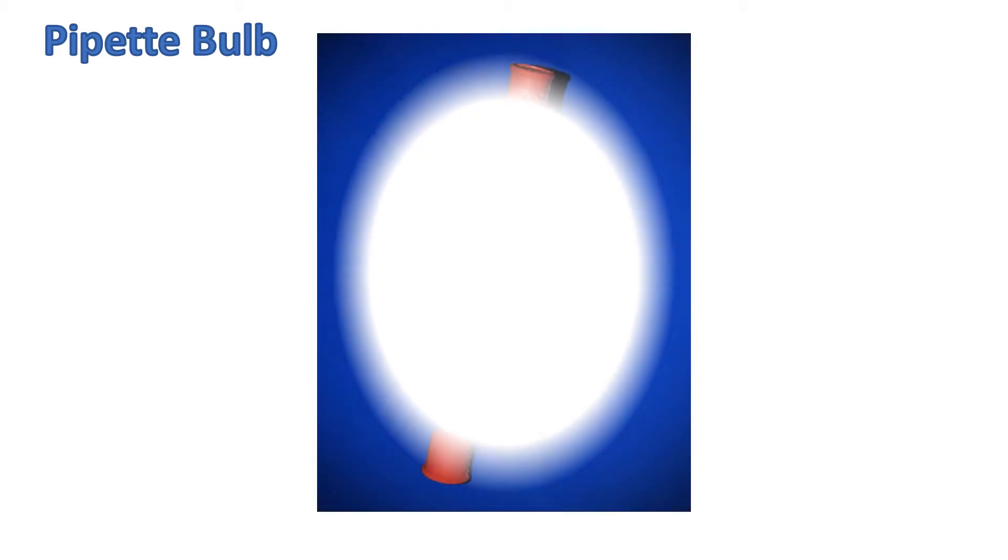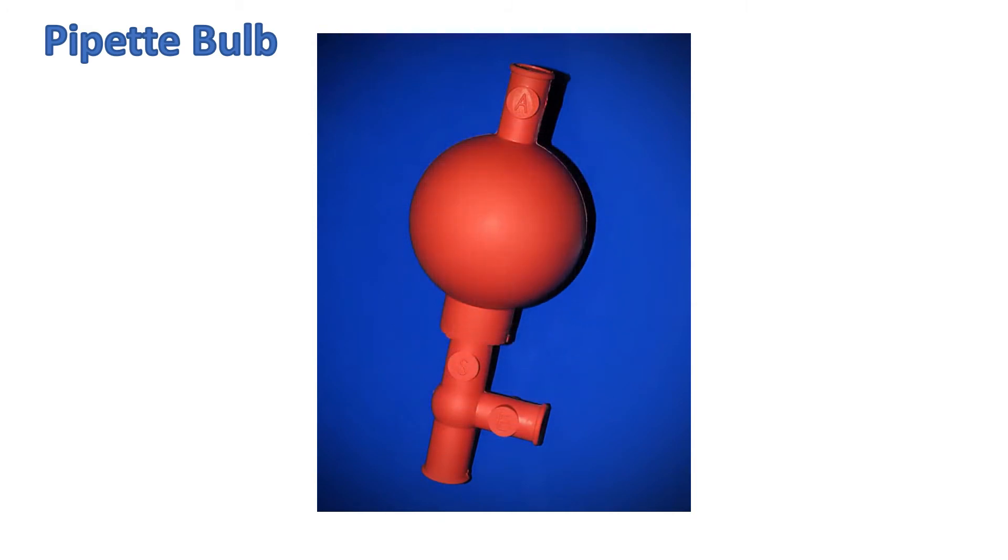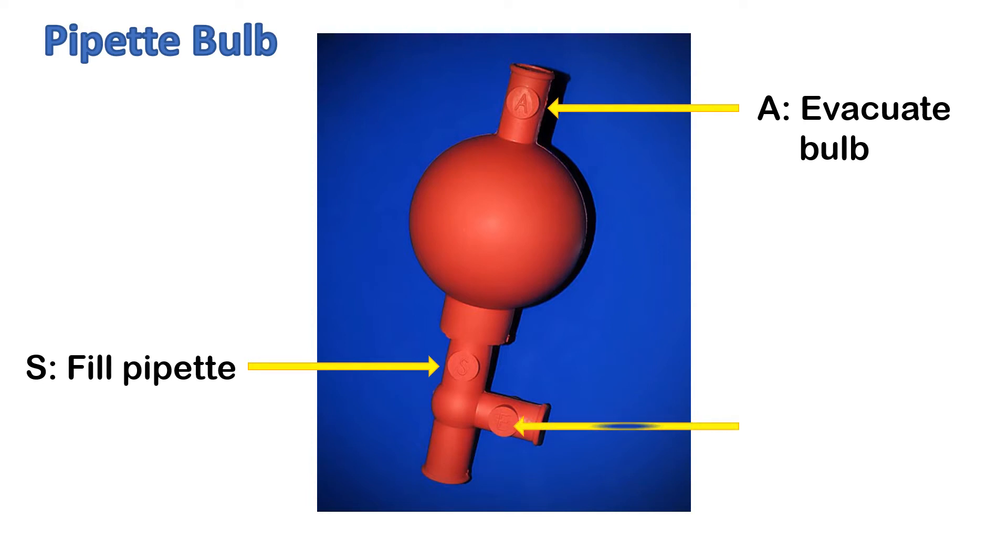There are three parts in a pipette bulb: S, E, and A. Press A and squeeze the bulb simultaneously to release the air out of the bulb. The S symbol is a suction valve. Press S to draw the solution into the pipette. The E symbol is for the empty valve. Press E to drain solution from the pipette.